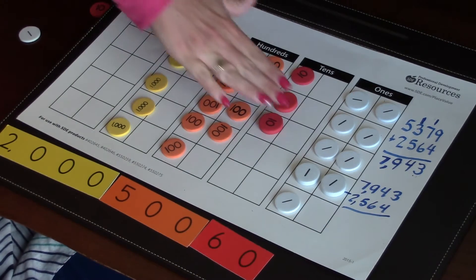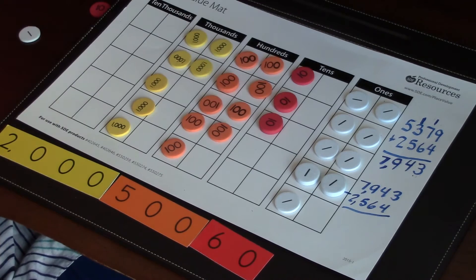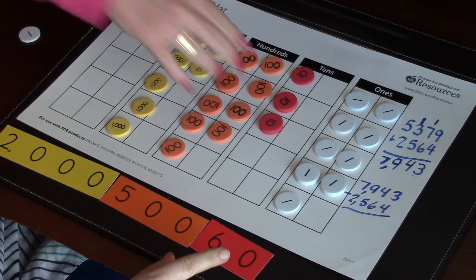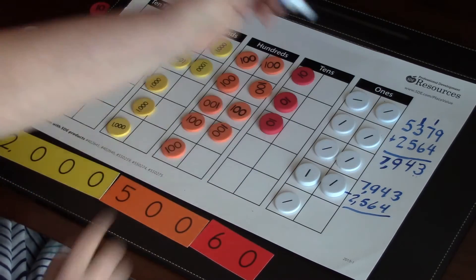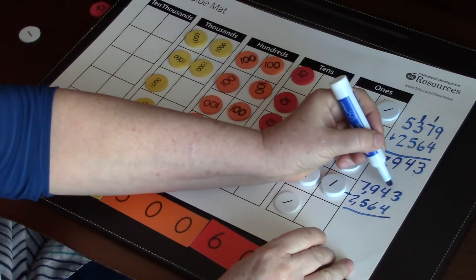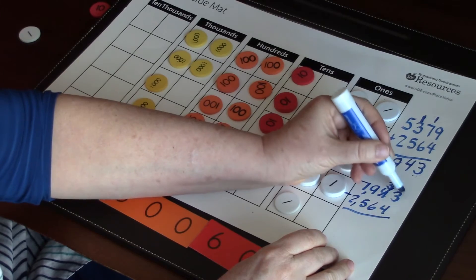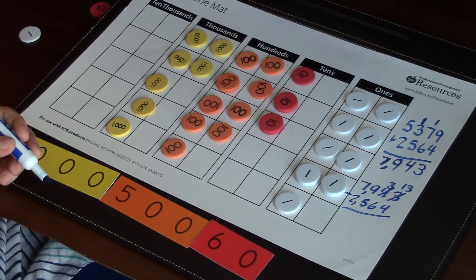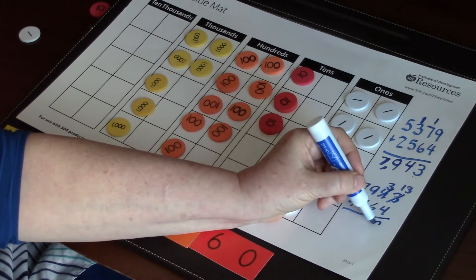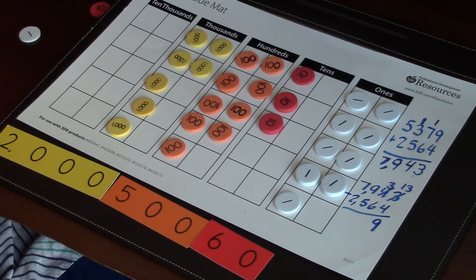Now, how many ones did we leave here? Nine. Before we're going to record that, let's show what we did. Go to your tens. We started with four tens and what did we do? Well, we made it three tens and 13 ones. And when we subtracted, how many ones did we have left? Nine.